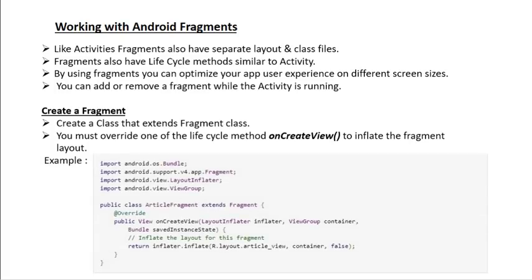Here is a simple example of a fragment class. The class name is ArticleFragment, which extends Fragment, and we override the lifecycle method called onCreateView. That method contains three parameters: a LayoutInflater object, a ViewGroup object, and a Bundle object. Using the LayoutInflater object, we call a method called inflate. The first parameter is the layout reference corresponding to this fragment, the second parameter is the container, and the final parameter is a boolean value.